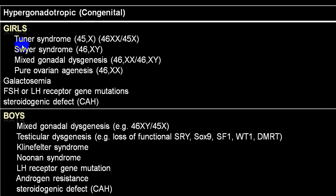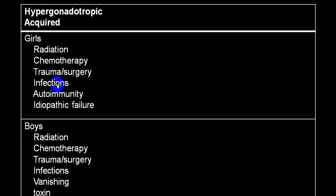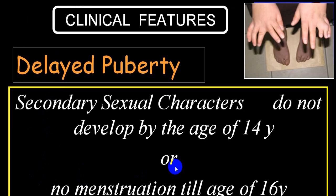In females, causes of hypergonadotropic hypogonadism include Turner syndrome, Swyer syndrome, mixed gonadal dysgenesis (XX or XY), pure ovarian agenesis (XX), galactosemia, FSH/LH receptor mutations, steroidogenic defects. In males: mixed gonadal dysgenesis, testicular dysgenesis, Klinefelter syndrome, Noonan syndrome, androgen resistance, steroidogenic defects. Common causes of primary damage to testes or ovary include radiation, chemotherapy, trauma, surgery, infection, autoimmunity, and idiopathic causes. There is also a condition called vanishing testis, and certain toxins and drugs.